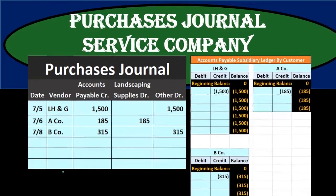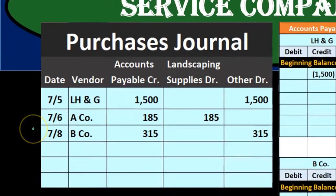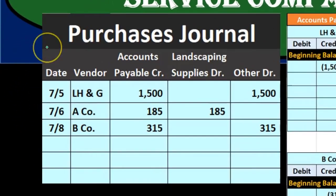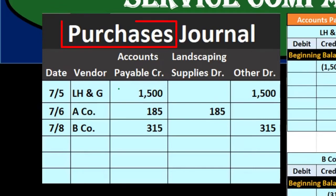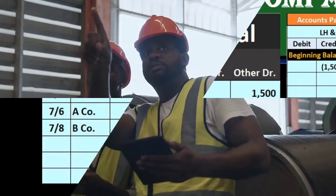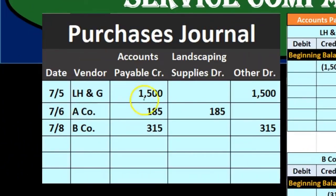In this presentation we will look at the purchases journal for a service company. The purchases journal records purchases not for cash but on account — in other words, it's really an accounts payable journal. For a service company, a typical purchase made on account might be something like supplies.